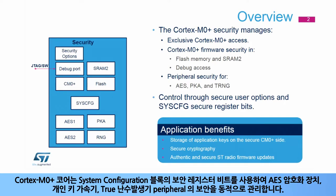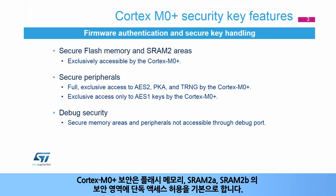The AES encryption machine, private key accelerator, and true random number generator are peripherals whose security is managed dynamically by the secure Cortex-M0 Plus core through secure register bits in the system configuration block. The Cortex-M0 Plus Security is based on giving exclusive access to a secure area in flash memory and in SRAM2A and SRAM2B.